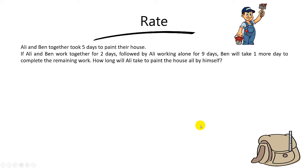Hi there, welcome back. Now let's go through a pretty challenging question on rates. Ali and Ben worked together, took 5 days to paint a house. If Ali and Ben worked together for 2 days, followed by Ali working alone for 9 days, Ben will take 1 more day to complete the remaining work. And the question asks how long will Ali take to paint a house all by himself.